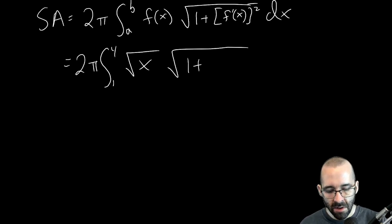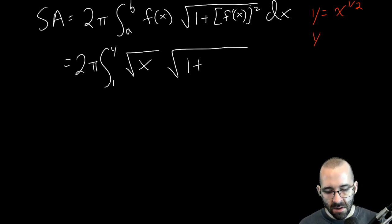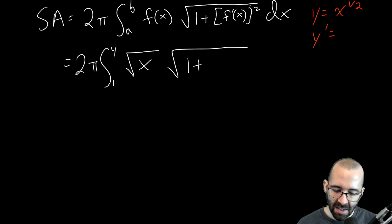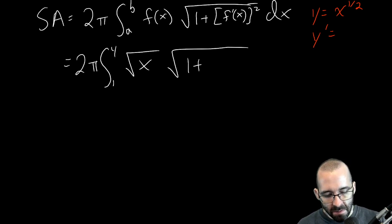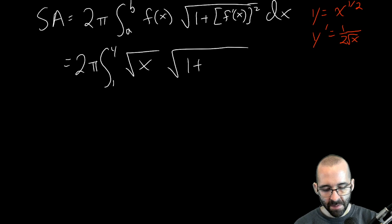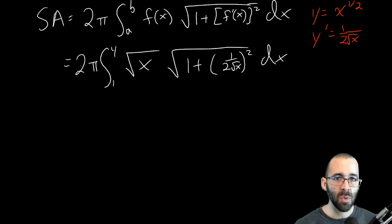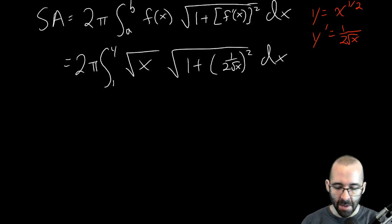We need the derivative. The function is √x, and using the power rule its derivative is 1/(2√x). We need to square that derivative since the formula always uses the derivative squared. We'll simplify and evaluate this integral at the end of the video. You can also pause right now and try it yourself, then check at the end whether we get the same answer.